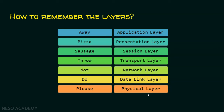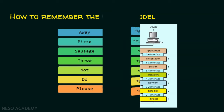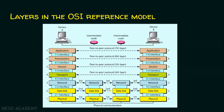Now we will see how each layer interacts with other layers. In this scenario, there are two devices — device A and device B — connected to a network, with some intermediary nodes which are routers. When data wants to move from one computer to the other, the data has to be placed on the cable, and before that it must go through all seven layers. Finally, the physical layer places the data on the cable.